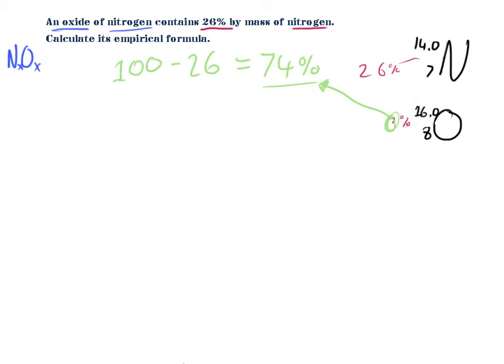Now I'm going to lay this out in a table with nitrogen in one column and oxygen in the other. The first thing I know is the percentages. To make it simple for problem solving, I'm going to assume I have a 100 gram sample. Since 26% by mass is nitrogen, the mass of nitrogen in that 100g sample is 26 grams, and the mass of oxygen is 74 grams.